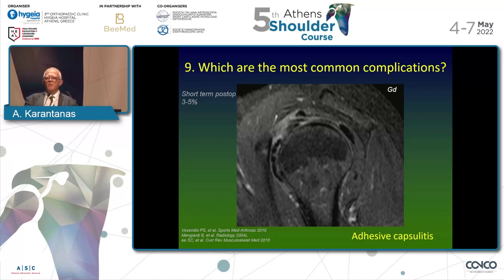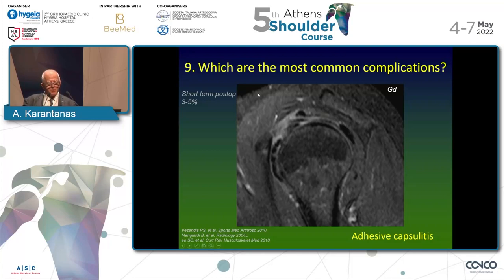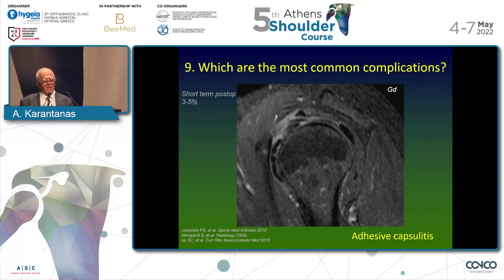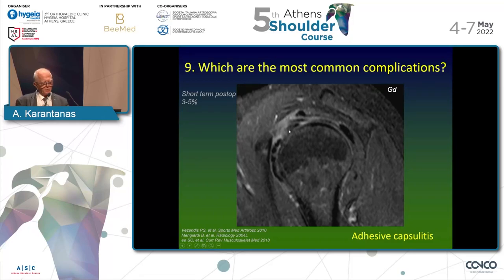The ninth question concerns the most common complications. Between 3 to 5% of rotator cuff repair patients develop adhesive capsulitis. The most powerful finding for suggesting this diagnosis is fat-suppressed T1 with gadolinium injection — you can see very nicely enhancement in the rotator cuff interval. There is no doubt this is adhesive capsulitis.